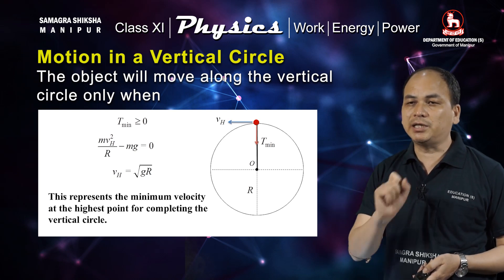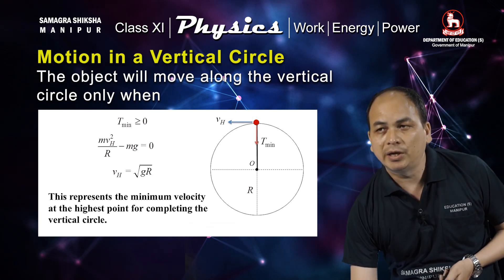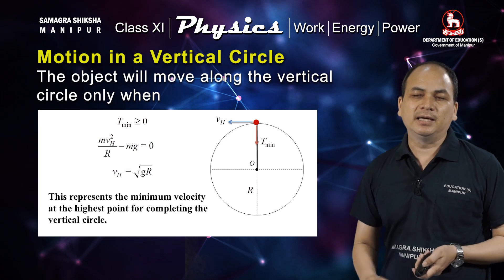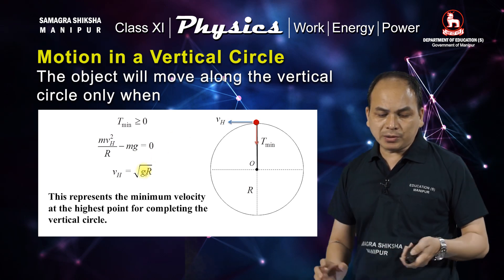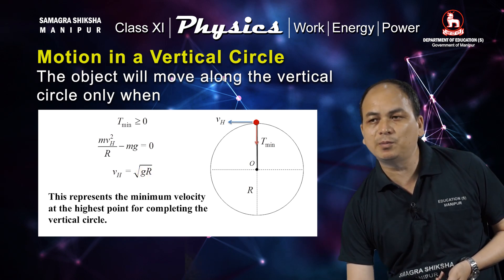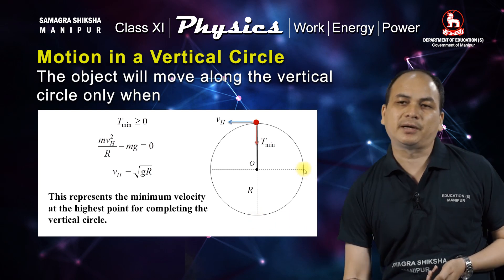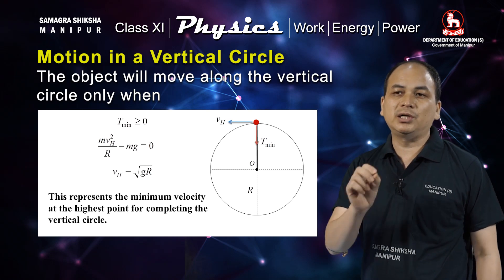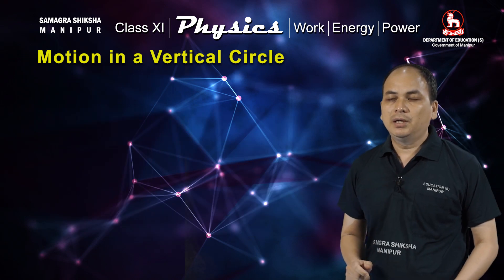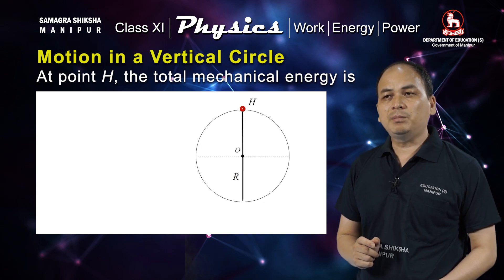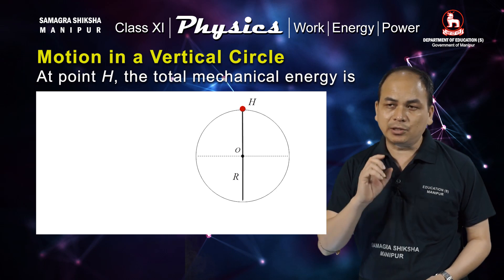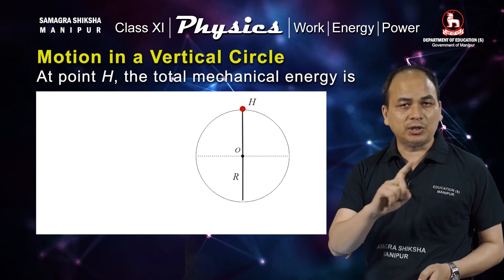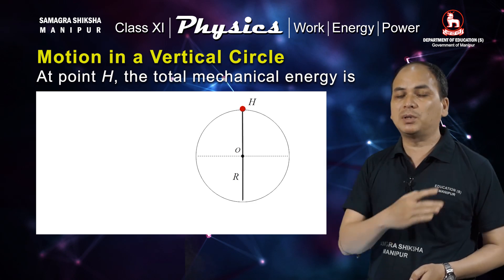Here r is the radius of the circular path, which is the same as the length of the string. Now we have to find out the minimum velocity at various points — in particular at the lowest point.